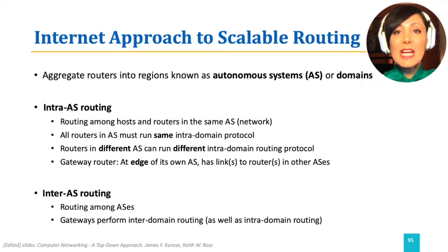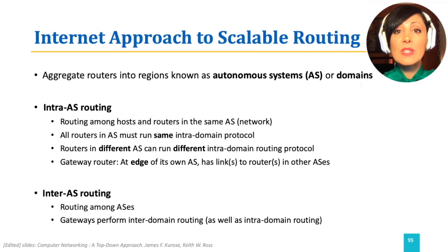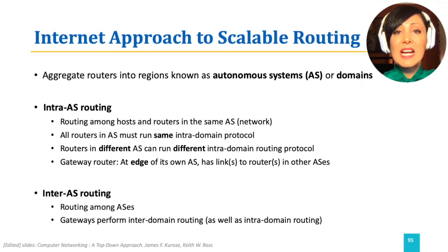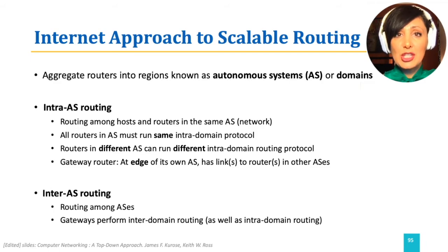Within each AS, we define the routing protocol which runs only within that domain. We also determine the edge of the AS with gateway routers connecting this AS to other ASs. For inter-AS routing, we decide how those gateway routers communicate with each other.